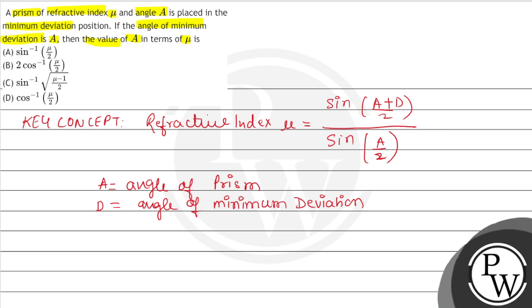Now, in the question we have given that both are equal to A. So if we put it in the formula: mu equals sin of (A plus A) by 2, divided by sin of A by 2. This equals sin of A divided by sin of A by 2.